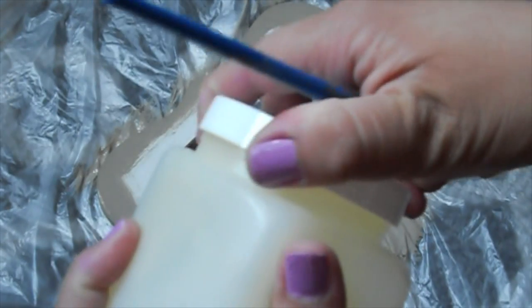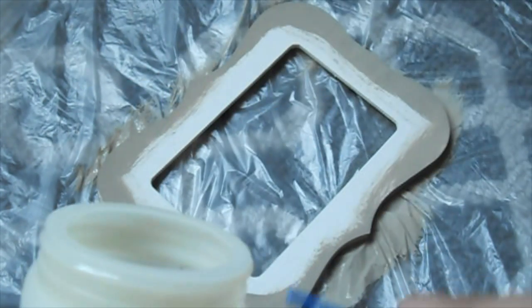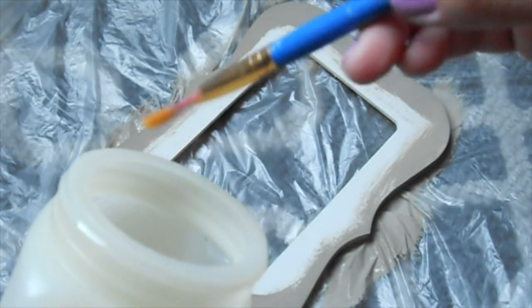Now you're going to use Vaseline and add it to the corners or where you want the frame to look more distressed.